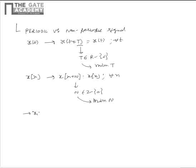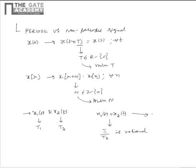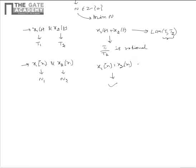Given two signals X1(t) and X2(t) which are periodic with periods T1 and T2, the signal X1(t) + X2(t) is periodic if and only if the ratio T1/T2 is rational. The period of X1(t) + X2(t) is LCM of T1 and T2. Similarly, given two discrete-time signals X1(n) and X2(n) which are periodic with periods N1 and N2, the signal X1(n) + X2(n) is always periodic and its period is LCM of N1 and N2.